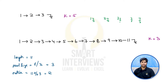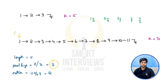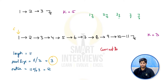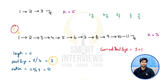We start with a current pointer pointing to the head of the linked list, and a previous pointer initially pointing to null. For the first part, each part should be at least size 3. Since there are 2 extra nodes, we can only add one extra node to the first part — so the current part size becomes 3 + 1 = 4.